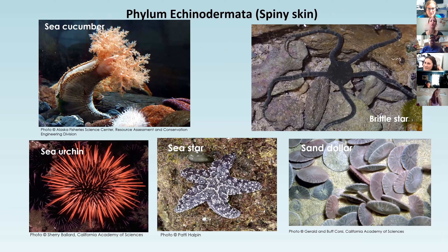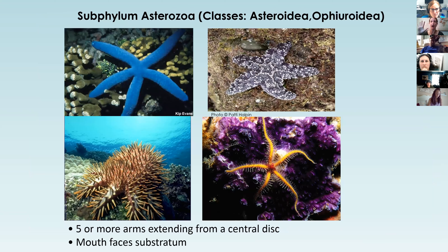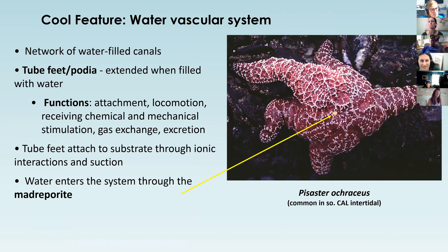Echinodermata - 'echino' meaning spiny and 'derm' meaning skin - so your echinoderms are all your spiny skin animals: sea cucumbers, sea stars, sand dollars. They all have pentaradial symmetry - 'penta' meaning five - which is really easy to see in sea stars because they have five or more arms extending from a central disc, and their mouth faces the bottom or substrate.